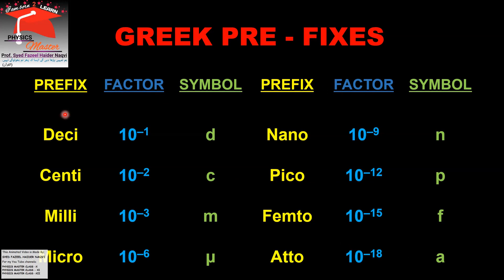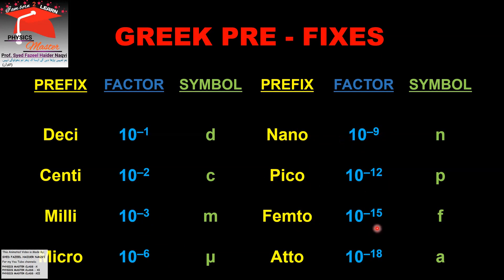Greek prefixes are: deci, centi, milli, micro, nano, pico, femto, atto. These are all prefixes and their factors are: deci is 10 to the power of minus 1, centi is 10 to the power of minus 2, milli is 10 to the power of minus 3, micro is 10 to the power of minus 6, nano is 10 to the power of minus 9, pico is 10 to the power of minus 12, femto is 10 to the power of minus 15, and atto is 10 to the power of minus 18.